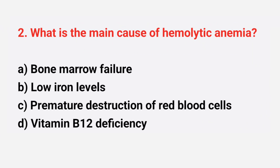Question number 2: what is the main cause of hemolytic anemia? The right answer is option C, premature destruction of red blood cells.